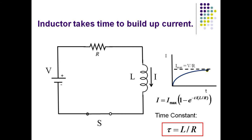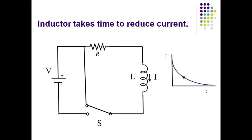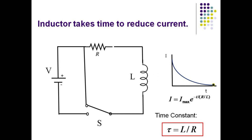The time constant depends on the quotient of the inductance to the resistance. The larger the inductance, the longer it takes for the current to become established. If the inductor already has current flowing and the power supply is removed by flipping a switch, the current decays away at a rate that once again depends on the ratio of L to R.